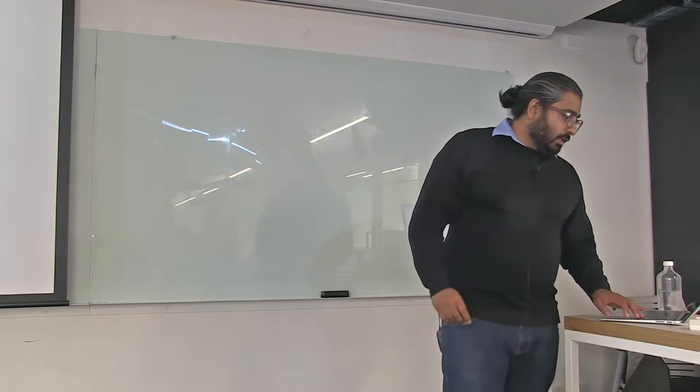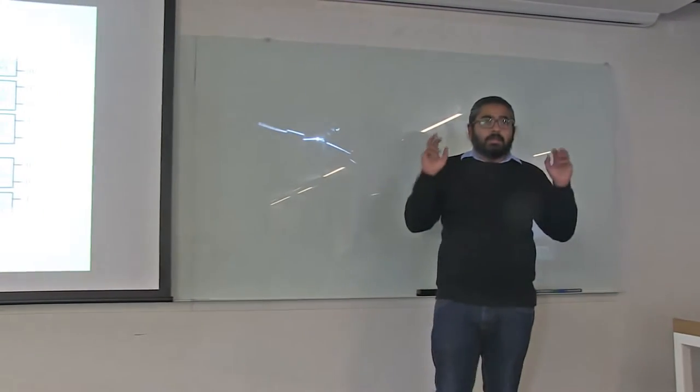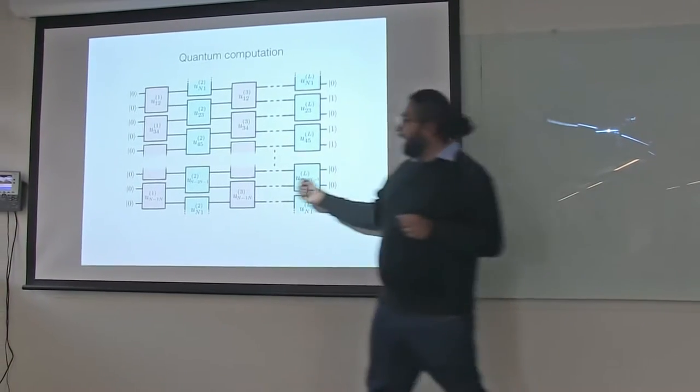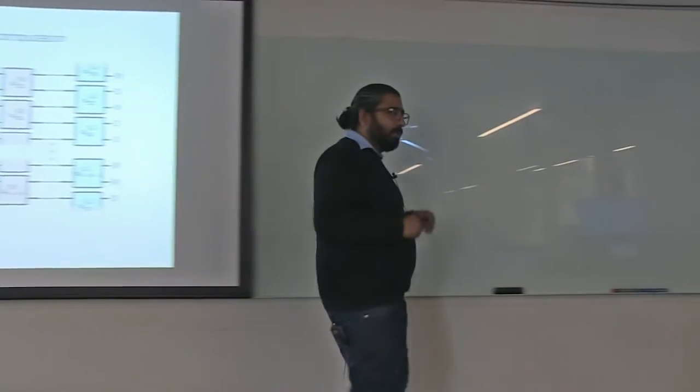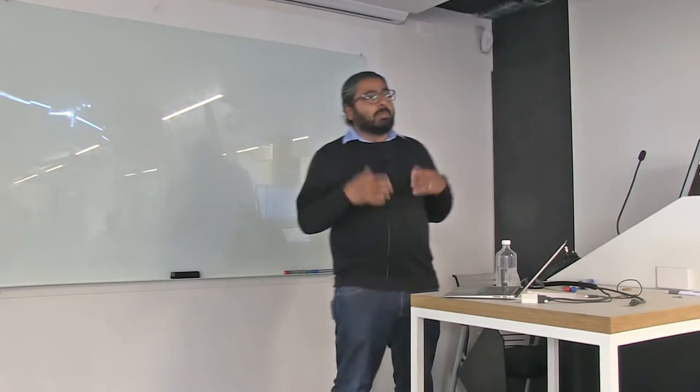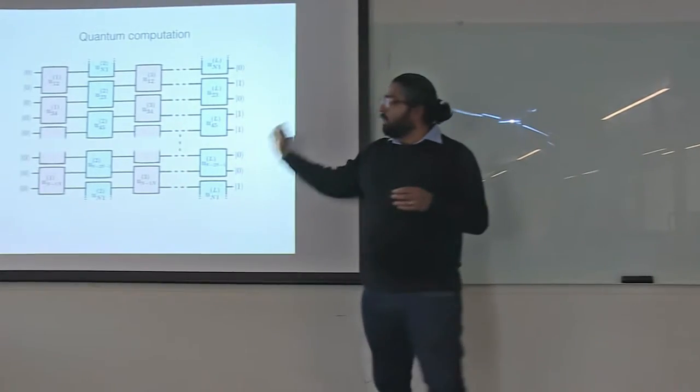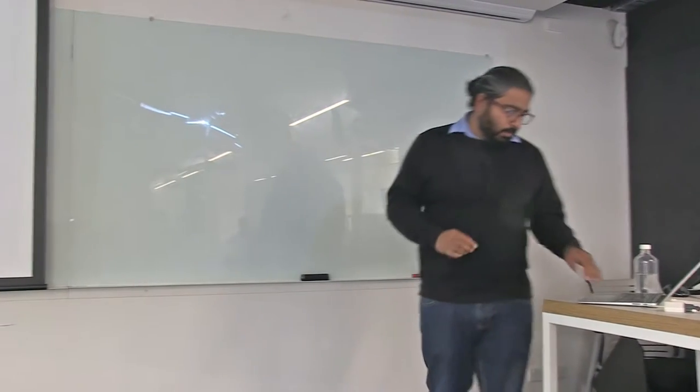So how does that differ from quantum computation? Well, not a whole lot in this picture. The only thing that I've done here is I've changed those zeros, and I've put these funny symbols around them. They're called kets. So I've changed my bits into zero kets. And then at the end of my computation, I have kets that are either zero or one. So it looks identical. So what gives?